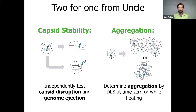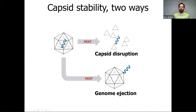You can look at aggregation either before an experiment at time zero using DLS, or look at it during heating. Looking more in depth at the two different kinds of capsid stability: if you have an intact capsid and add heat, it can break down and fall apart, or it can actually eject its genome. We're going to look at some data that supports this model.